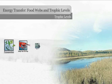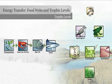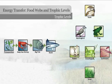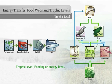As with food chains, food webs indicate the path of energy movement with arrows. Each step of energy transfer is called a trophic level. Remember that 'troph' means feed.